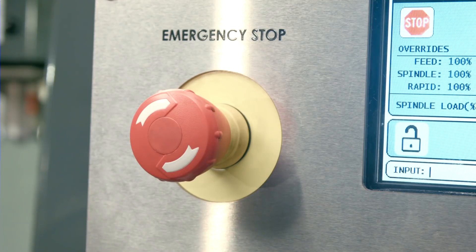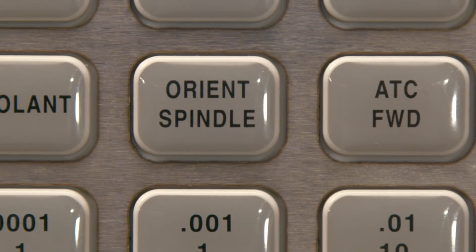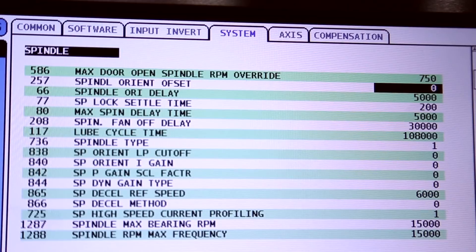Release the e-stop button and press reset a couple times to clear the alarm. Press the spindle orient button. This will orient the spindle to the default position. Now your drive dogs will not be in the correct position to do a tool change so we need to adjust that by changing parameter 257.